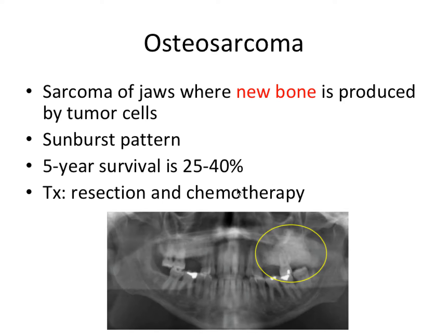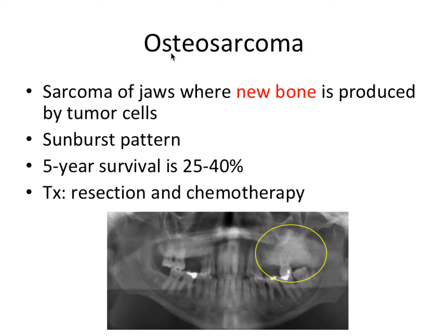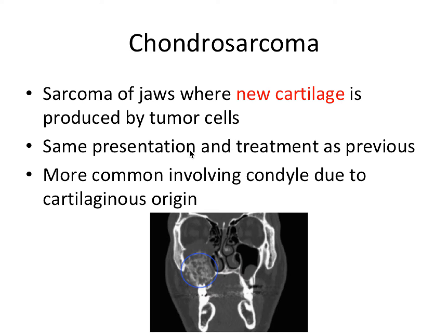Keep in mind, all of these malignancies are going to involve some level of resection surgery and/or chemotherapy and radiation therapy. Next we have chondrosarcoma, which is a sarcoma of the jaws where new cartilage is produced by the tumor cells instead of new bone. That makes sense based on the nomenclature — osteo means bone, whereas chondro means cartilage. It has the same presentation and treatment as osteosarcoma, and is more common involving the condyle due to its cartilaginous origin, since the mandibular condyle originates from its own condylar cartilage.